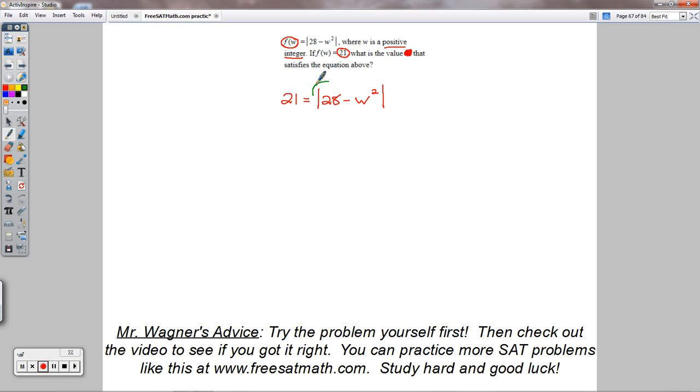Now, this value, whatever's inside the absolute value, I should adjust what I'm circling here.